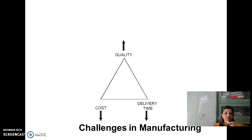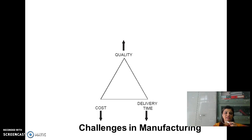There are a number of challenges in manufacturing like cost, delivery time, quality, and different raw materials. When you reduce the cost and delivery time, you can see the triangle. When you reduce cost and delivery time, we can get quality. And this is the main requirement of manufacturing — that we need quality products.